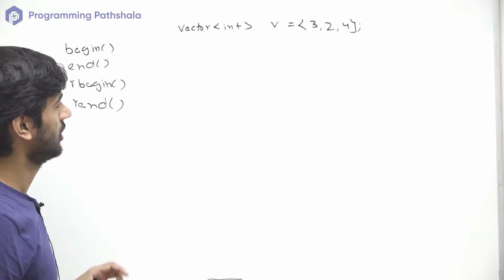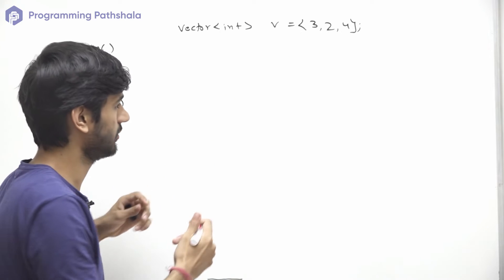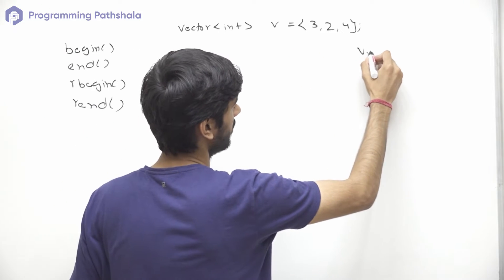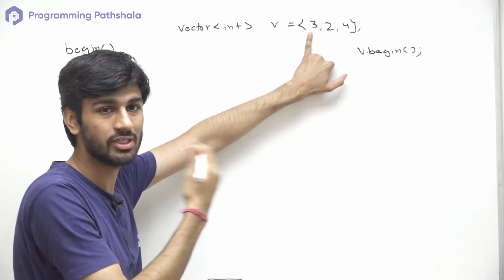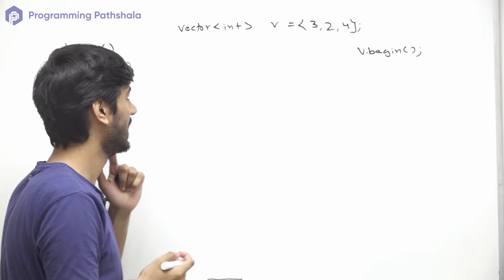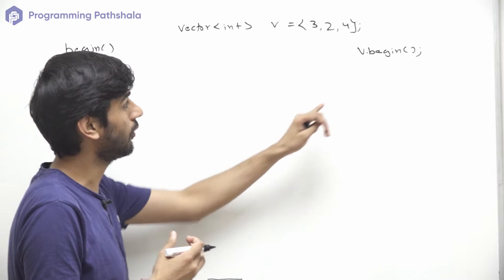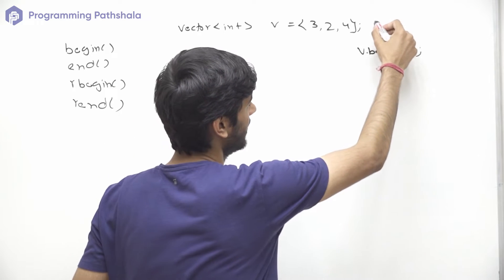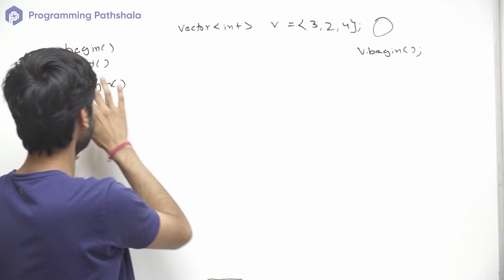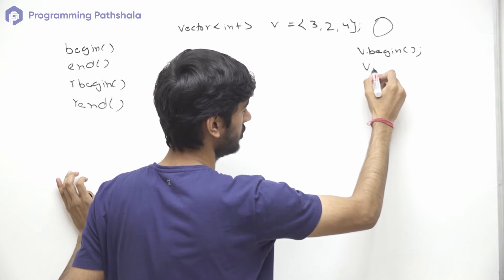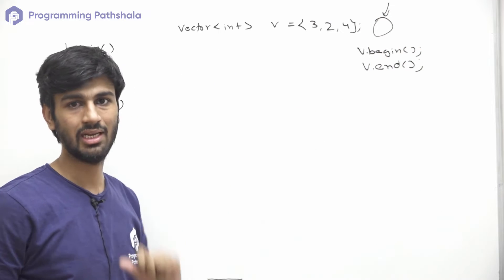Let's first talk about begin. begin returns an iterator pointing to the first element of the vector. For example, if we do v.begin(), it will return an iterator pointing to the first element. end refers to an imaginary position that follows the last element, and v.end() refers to that imaginary element.